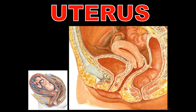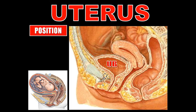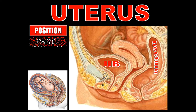The uterus is positioned behind the urinary bladder and in front of the rectum — between the urinary bladder anteriorly and the rectum posteriorly. The uterus has three parts: the fundus (upper part), the body (middle part), and the cervix (lower part).